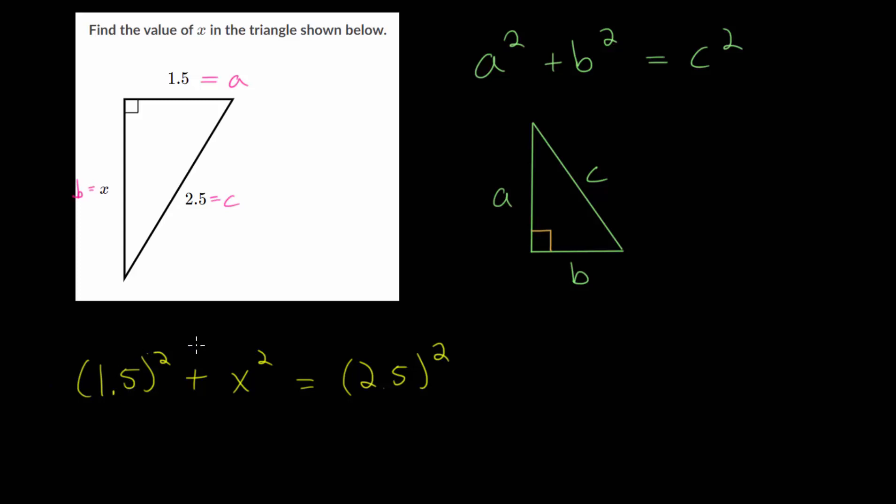So when squaring these numbers, since we have decimals, we could use a calculator, we could multiply it in long form here. Or you can ignore the decimal, and then add in two decimals later, since notice we have two total, and it'd be the same for this one as well.